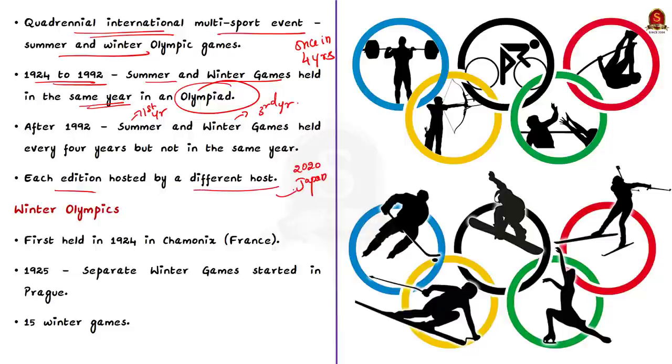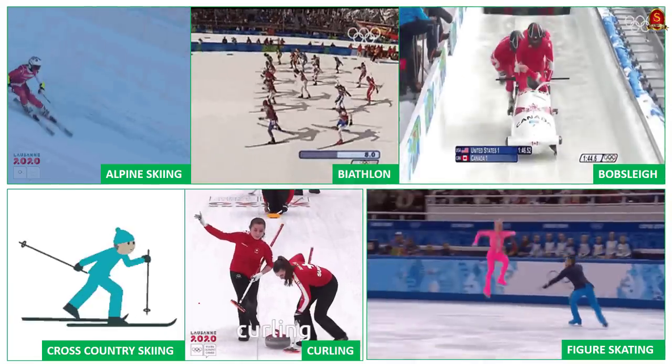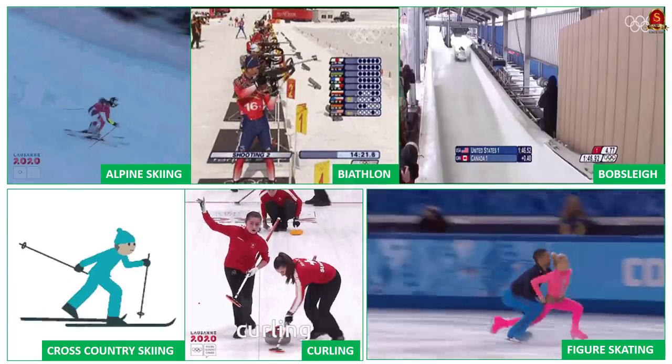Coming to the Winter Olympics, it was first held in 1924 in a place called Chamonix in France. But a separate winter game cycle started in 1925 through the International Olympic Committee Session in Prague. There are 15 Winter Games, namely Alpine Skiing, Biathlon, Bobsleigh, Cross Country Skiing, Curling, Figure Skating, Freestyle Skiing, Ice Hockey, Luge, Nordic Combined, Short Track Speed Skating, Skeleton, Ski Jumping, Snowboarding and Speed Skating.